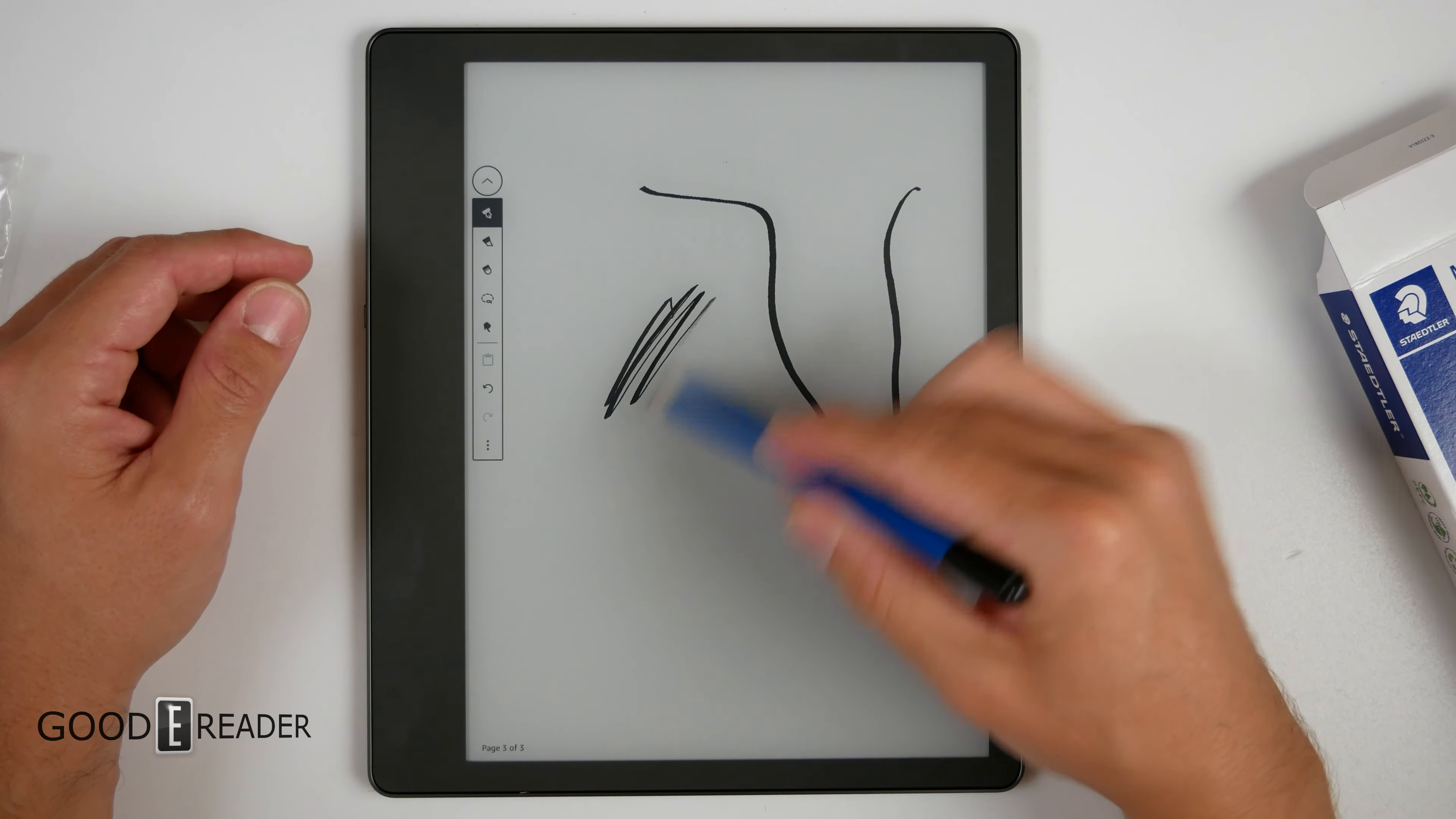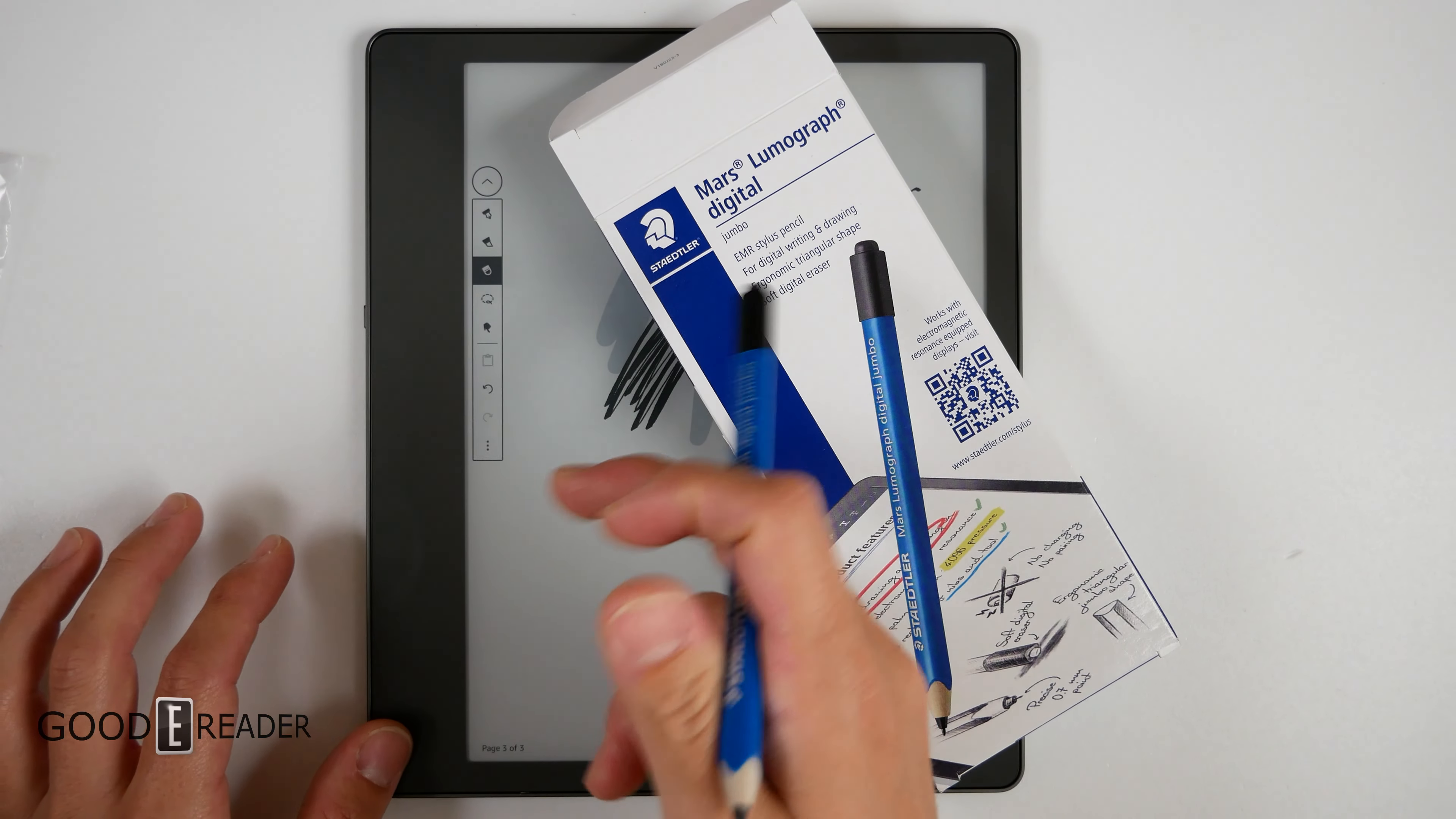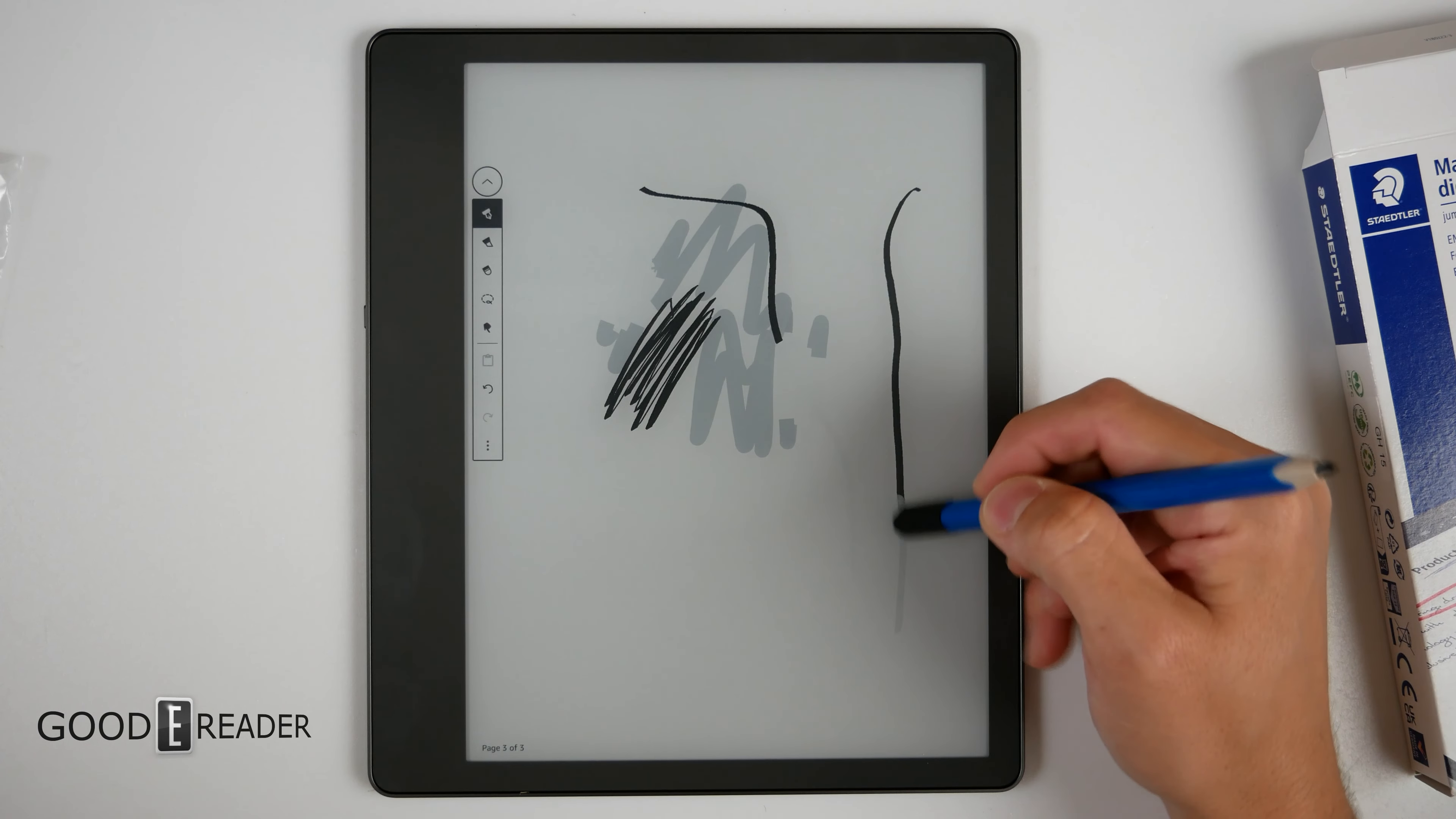Now the thing we really need to look at is the eraser. So what I'm gonna do is just scribble on the screen all over the place here, and then we're gonna try the eraser. What we will try first is a thin line, and then we'll see what we can see. Because remember, the Lumograph standard doesn't have an eraser at the back. You will have to use the tip, which you can still do on this. You can erase like that. But this one, even if you're on the palette with a paintbrush, you can still erase using the back. And this is where things get different.